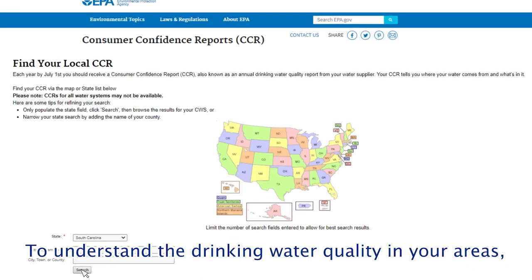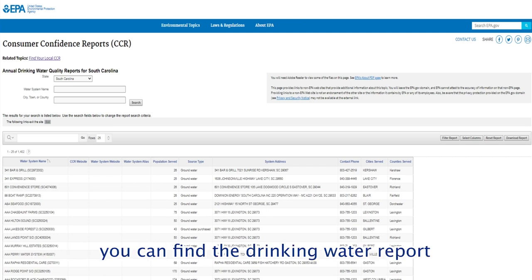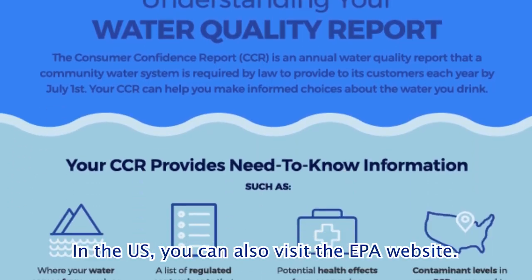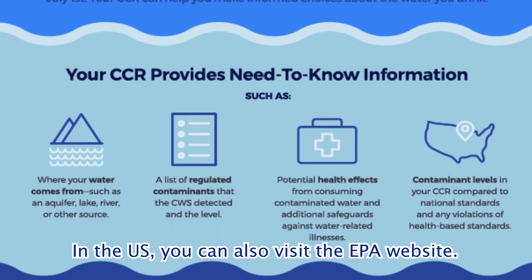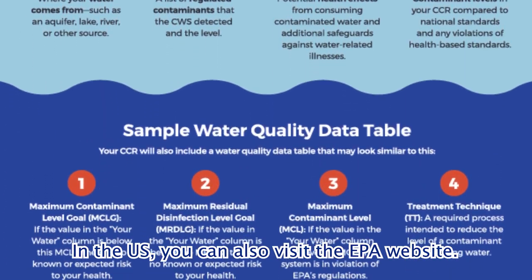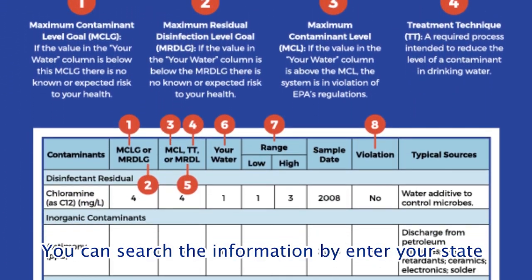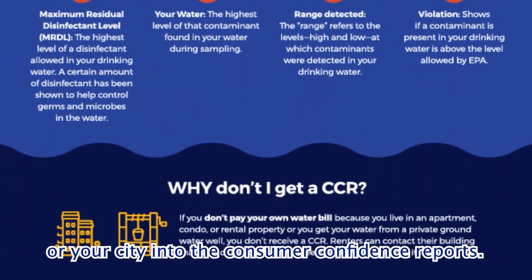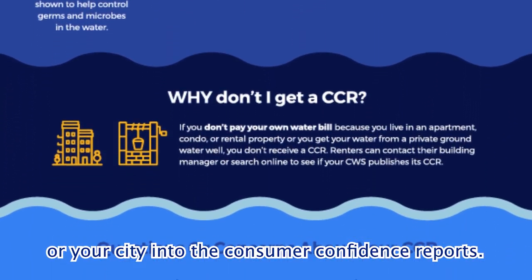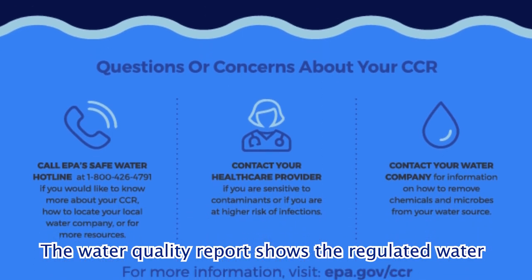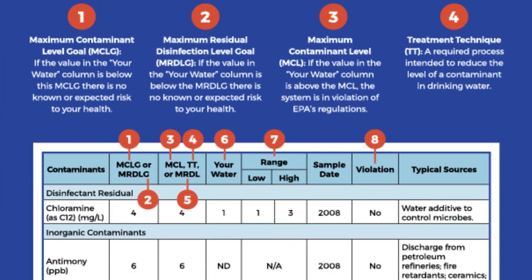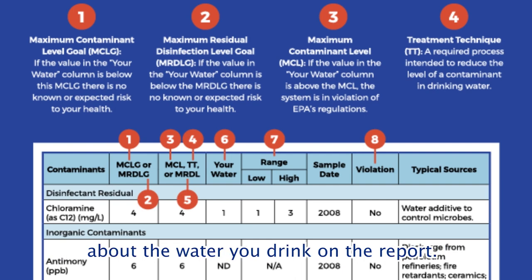To understand the drinking water quality in your area, you can find the drinking water report from your local water utilities. In the United States, you can also visit the EPA website and search for information by entering your state or city into the consumer confidence reports. The water quality report shows the regulated water contaminants data from your local area, with information about the water you drink.